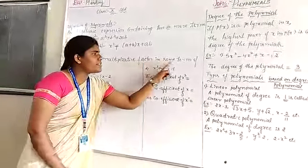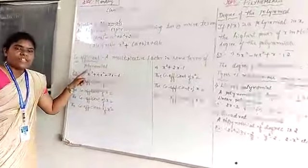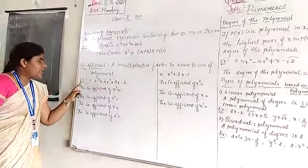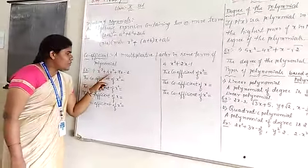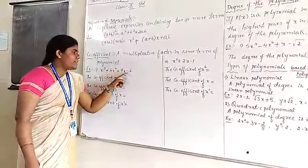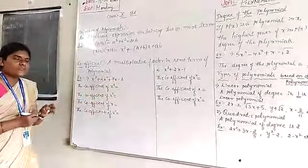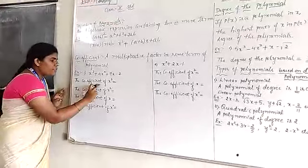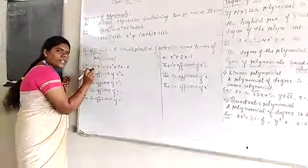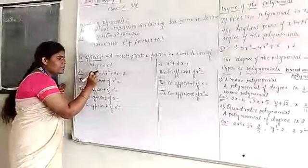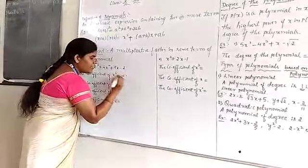A multiplicative factor in some terms of a polynomial is called a coefficient. Here I consider one example: x³ + 4x² + 7x − 2. The coefficient of x³ — which number is behind it? It is 1 × x³, so the coefficient is +1.